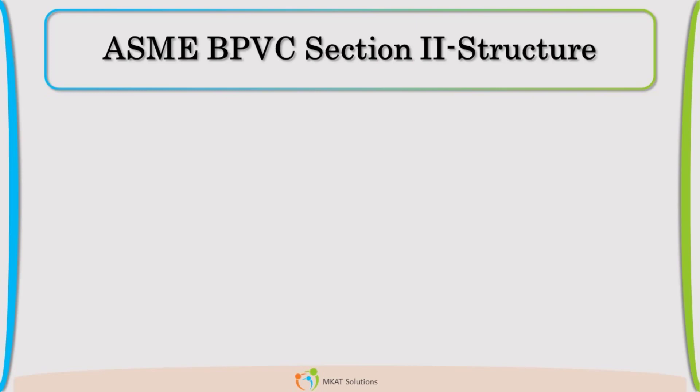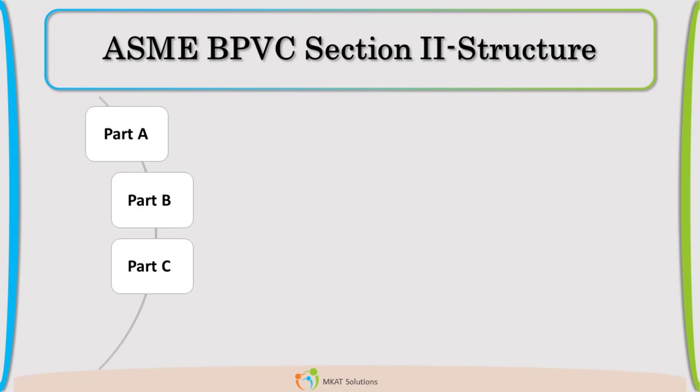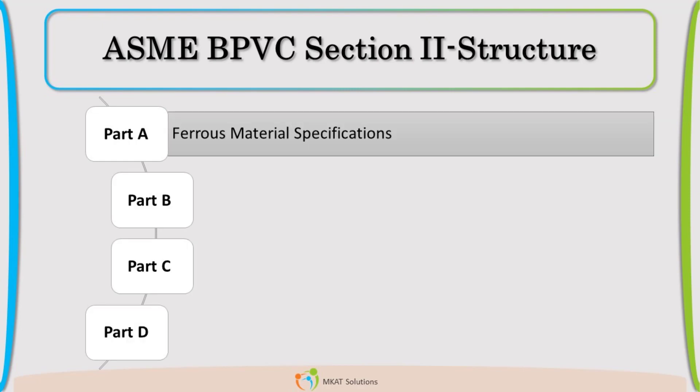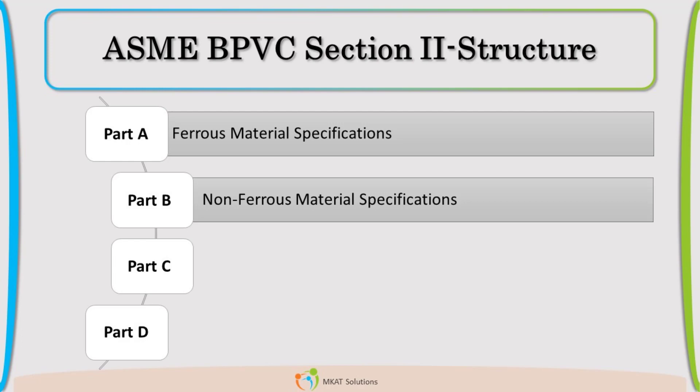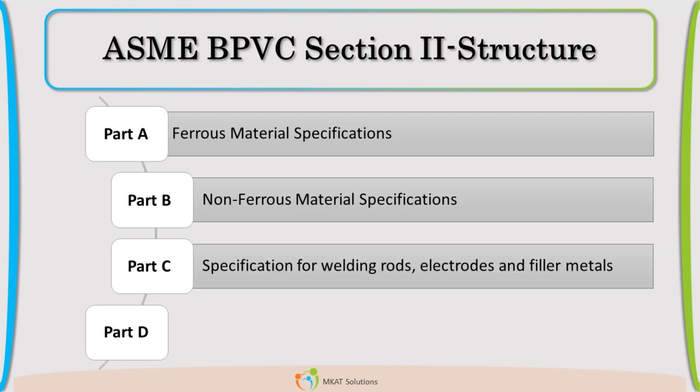Section 2 has four parts: Part A, Part B, Part C, and Part D. Part A talks about ferrous material specifications, which are generally used in the pressure vessel industry. Part B is non-ferrous. Part C is for welding rods and electrodes, wires,